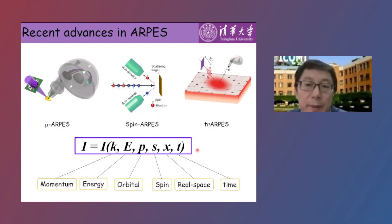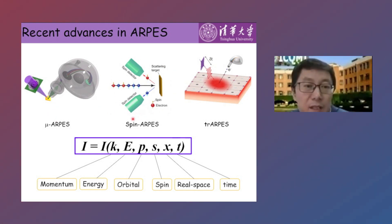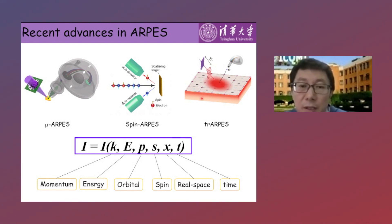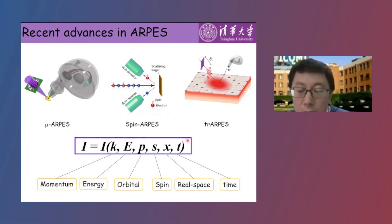The capability of ARPES has been greatly improved. By focusing the incident beam down to tens of nanometer scale, we can measure local fine electronic structures with micro-ARPES. By attaching a spin detector, we can measure the spin structure with spin-ARPES. If we use pulsed lasers, we can measure non-equilibrium electronic structure dynamics in the time domain using time-resolved ARPES. Accurate measurements of multi-degrees of freedom of quantum materials provide more complete information.